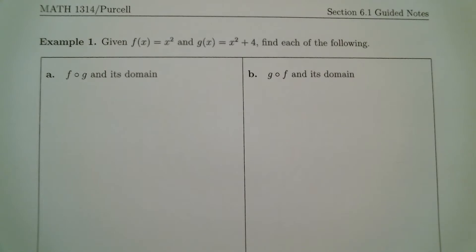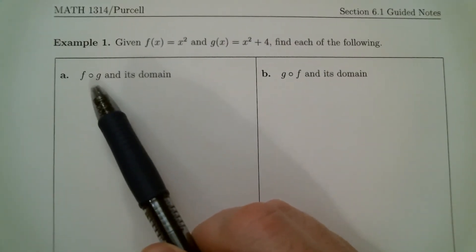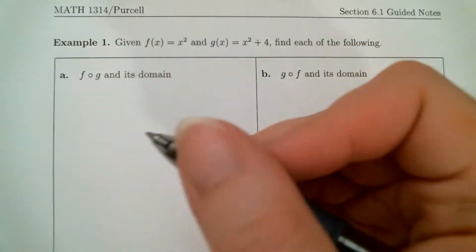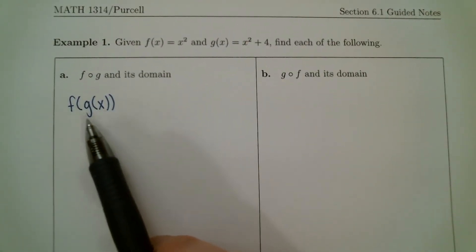In part A, we are looking for f composed with g — which is the same thing as f of g — and its domain. So make sure you understand: if you see that little circle in the middle, that indicates that this is a composition problem. Immediately, you want to write down f of g of x. This is the easier way to think about the composition problem.